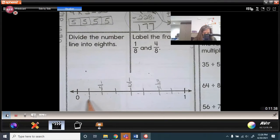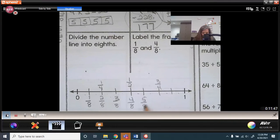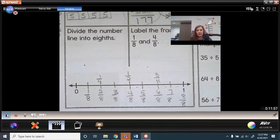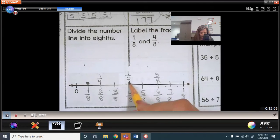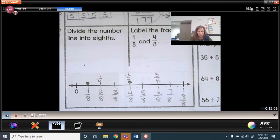So 1 eighth, 2 eighths, 3 eighths, 4 eighths, 5 eighths, 6 eighths, 7 eighths, and finally 8 eighths, which is equal to 1 whole. Now, it asks me to label where 1 eighth is. I'm going to place a point at 1 eighth and a point at 4 eighths. Remember, 4 eighths is also in simplest form equivalent to half. And 8 eighths in simplest form is equal to 1 whole.